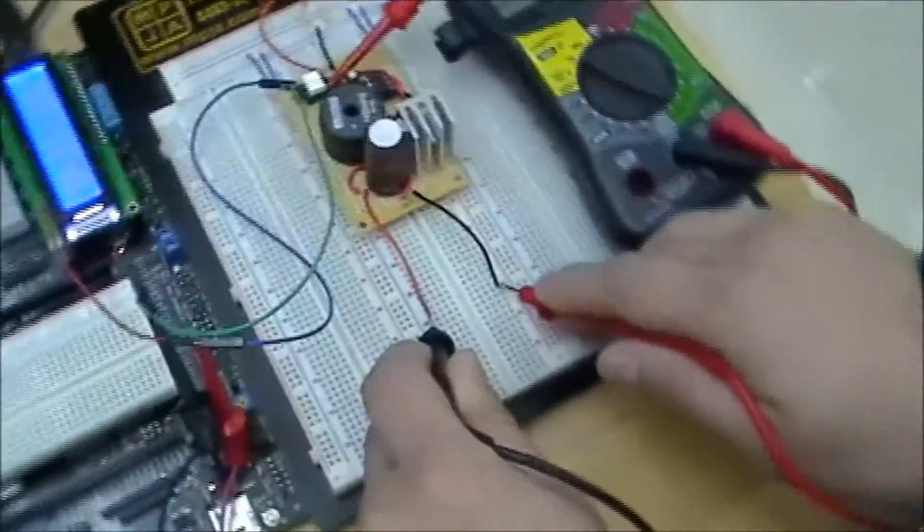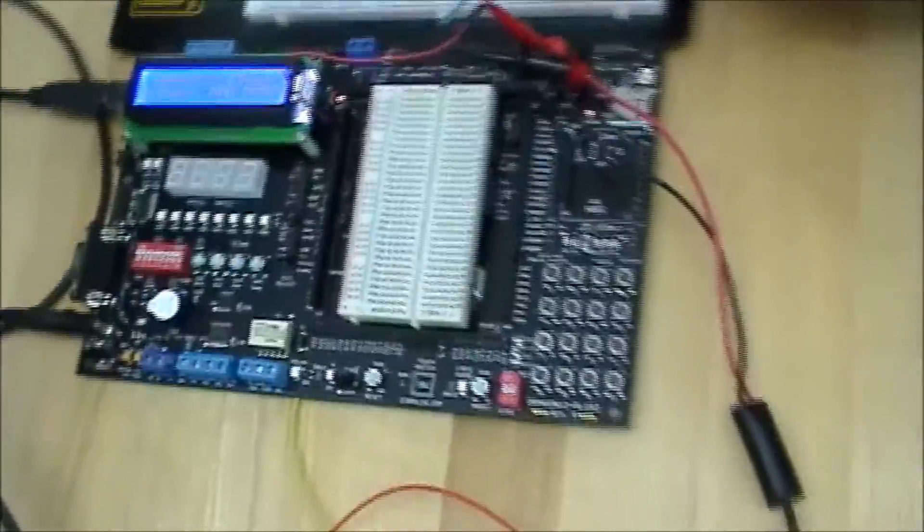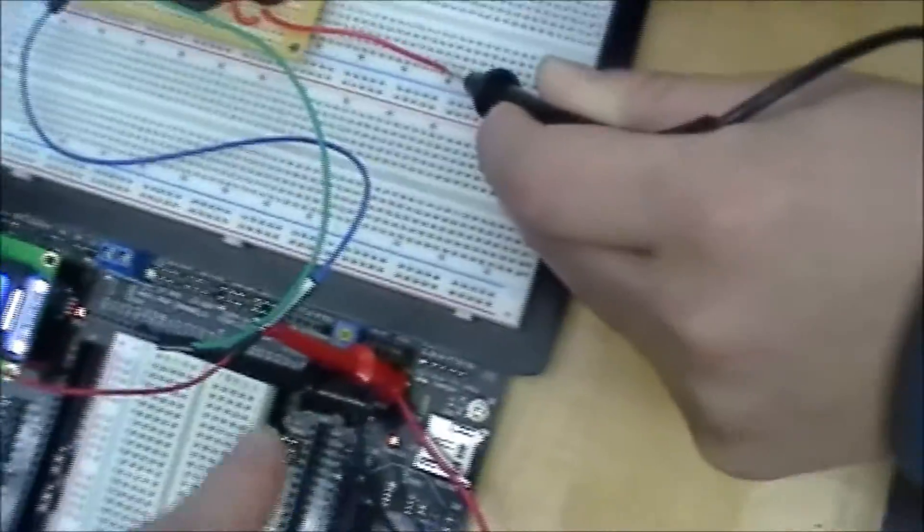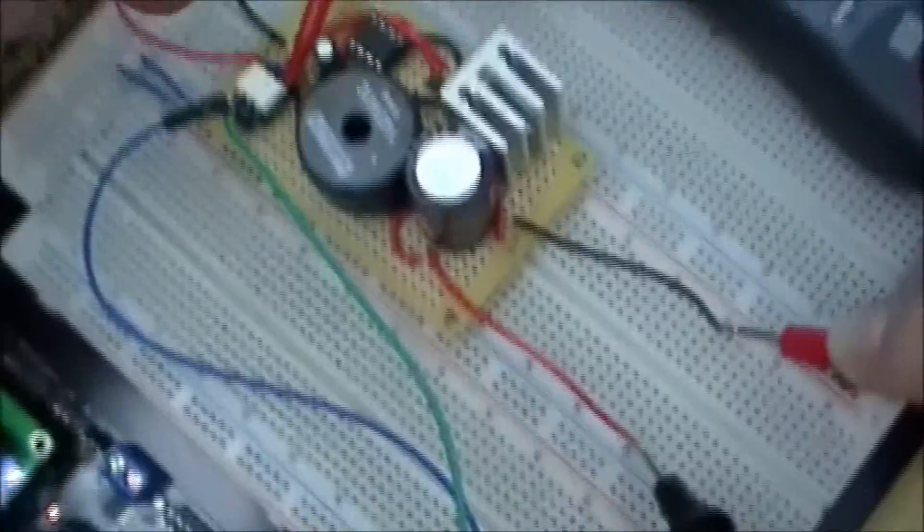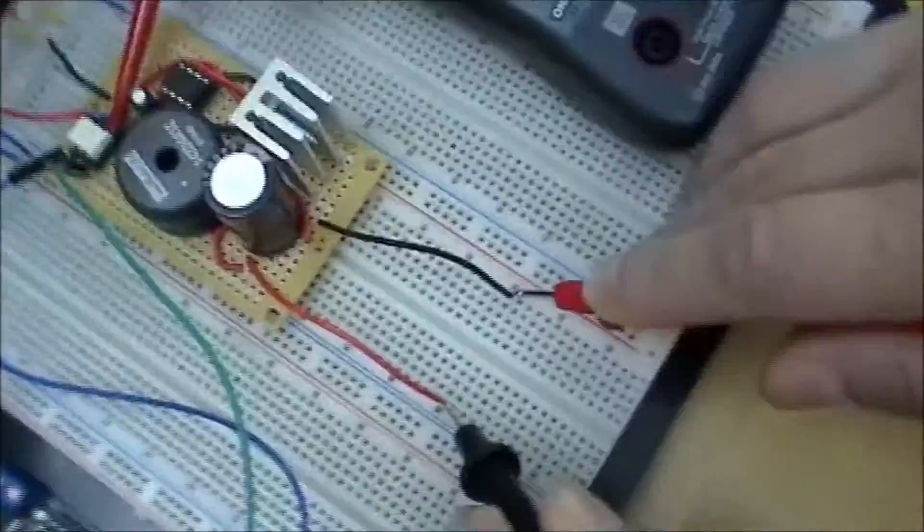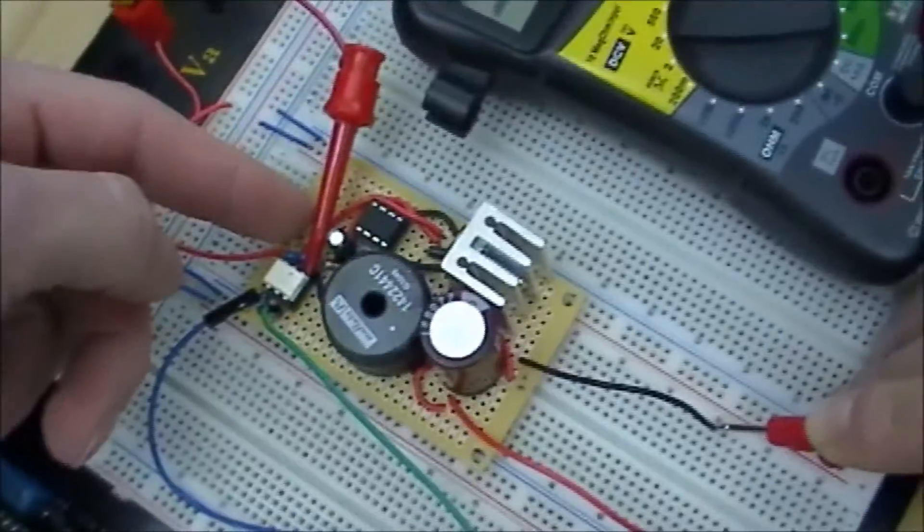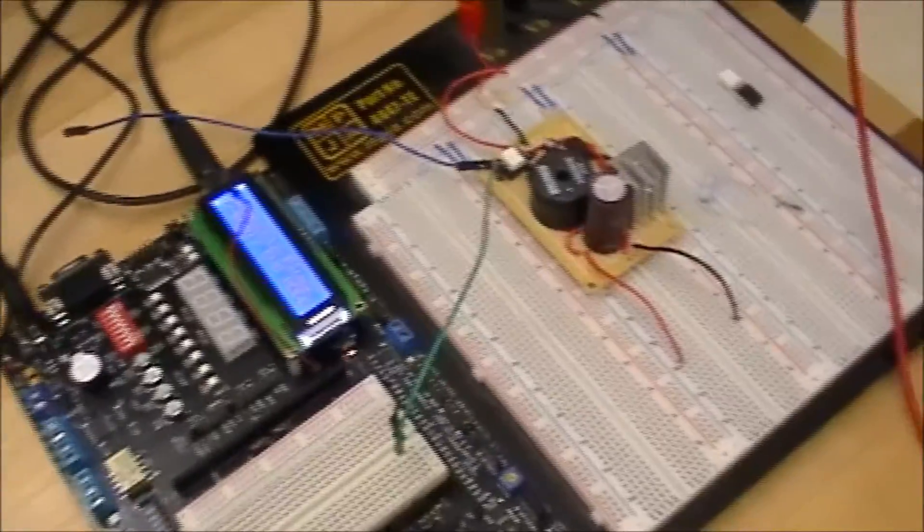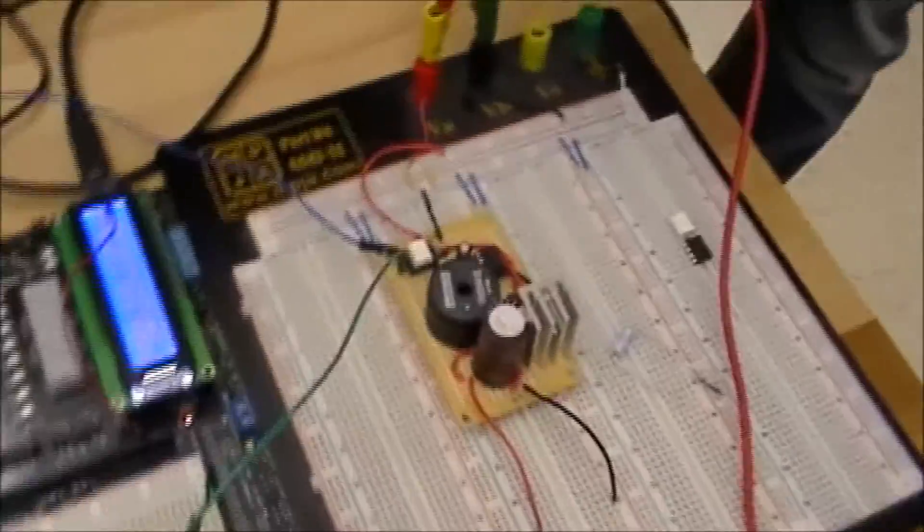This is our setup for our buck converter right here. We got our microcontroller from microprocessors course, and here we have our buck converter. Right here is our input square wave to our circuit from the microprocessor into our optocoupler, and then this is our high side gate driver. We're measuring the output from the optocoupler that's actually controlling our transistor.